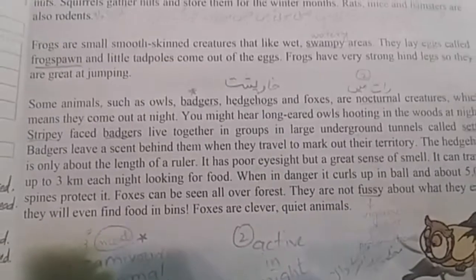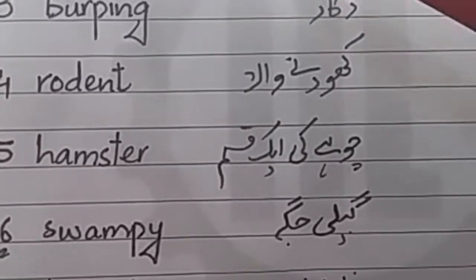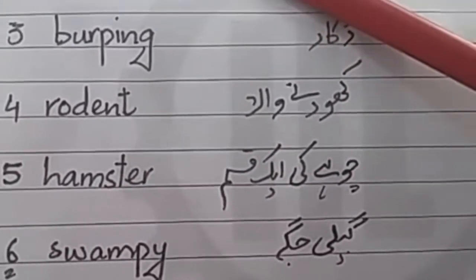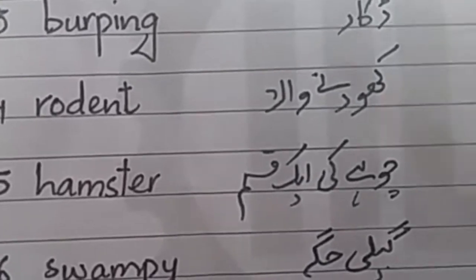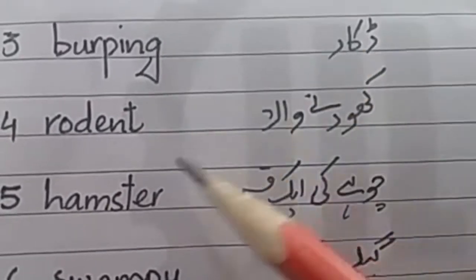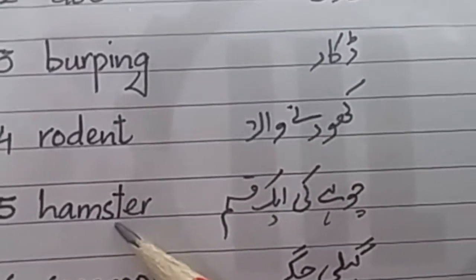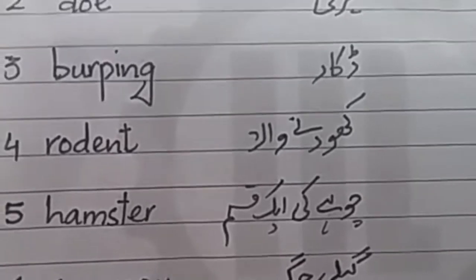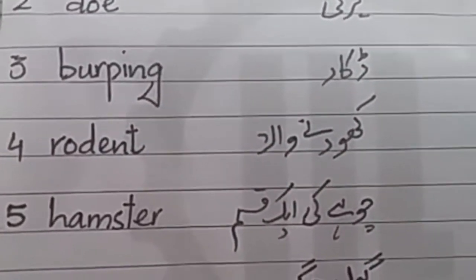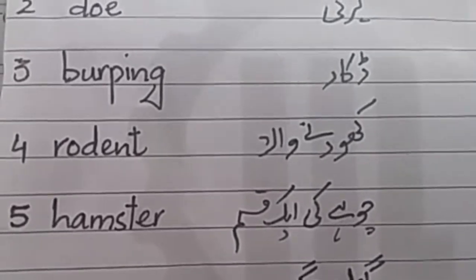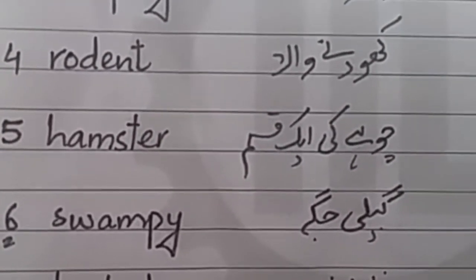I hope you all understood the reading. Dear students, write down the meanings in your books with pencils. Herbivores means nabat khor — plant eaters. Doe means female — herni. Burping means डकार. Rodent means one who digs. Hamster is a type of mouse. Swampy means wet place. Nocturnal means coming out at night. Fussy means one who makes noise or is particular.